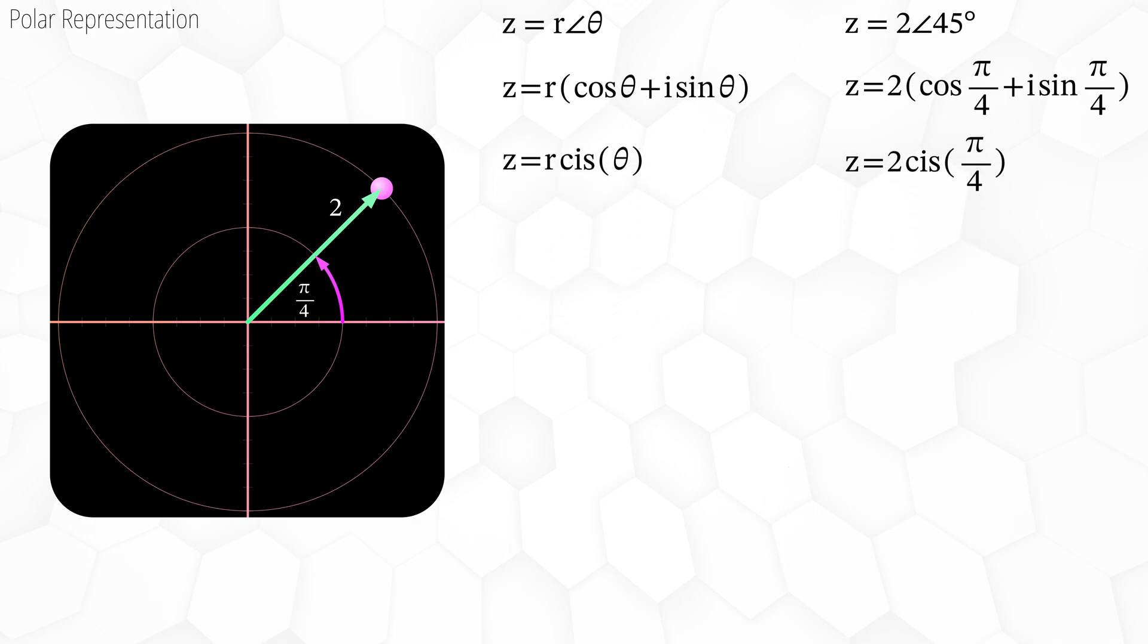All of the above forms are useful because you can measure theta in degrees or radians. Just make sure your calculator is set appropriately. The fourth form, however, is the exponential form, and it is by far the most widely used. It is also the most useful. However, theta must be expressed in radians to use this form. We will be using the exponential form in most of this video series, so take a moment to memorize it. z equals r times e to the power of i theta.